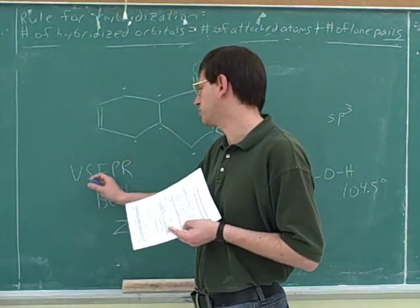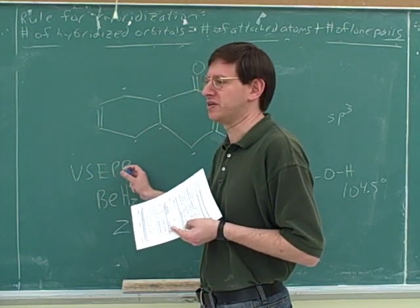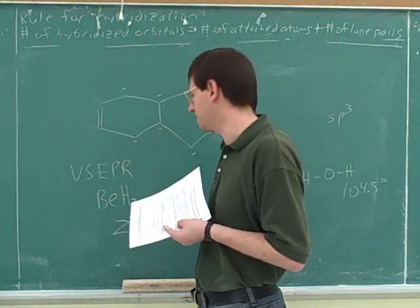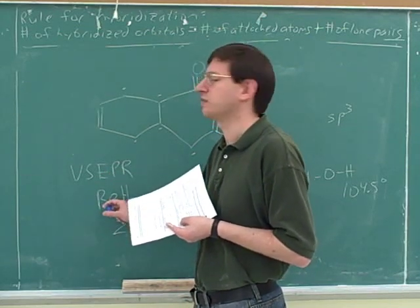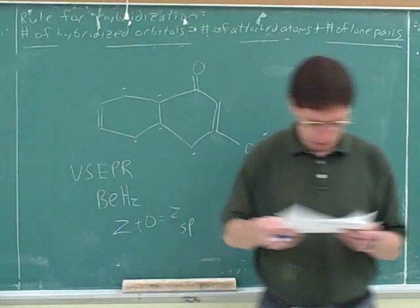So this is valence shell electron pair repulsion theory. That's just the theory we've been using all this time that said that the electron pairs repulse each other and have to get as far away from each other as possible. In this case, they'll take up a linear shape. Good.